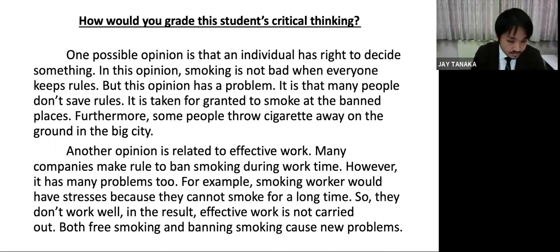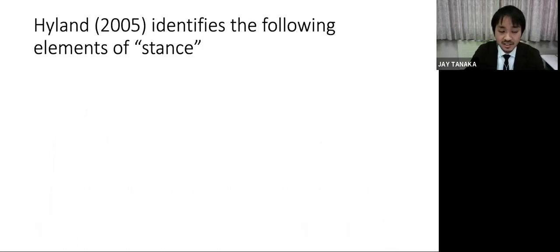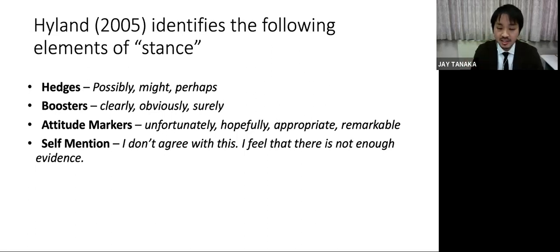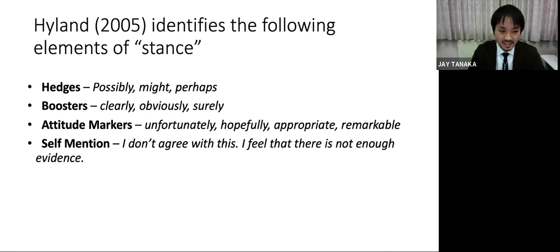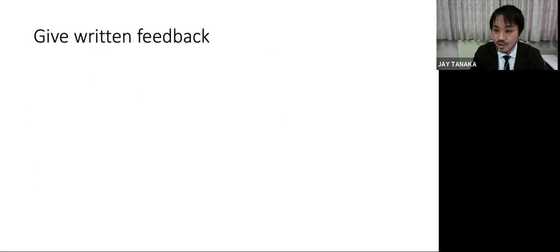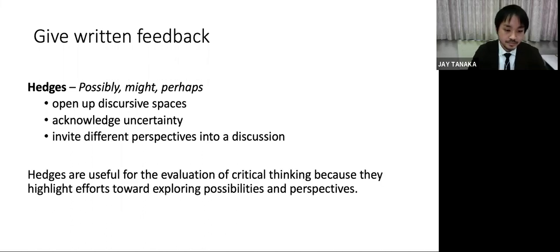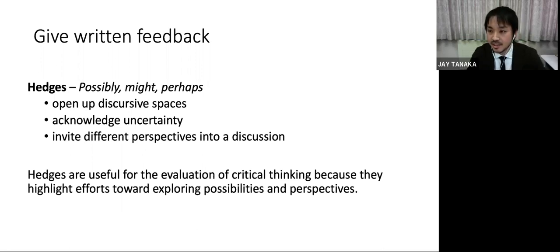A little more detail going into the text: Hyland did some research on the elements of stance — hedges, boosters, attitude markers, and self-mention. This can help people evaluating writing, grading pieces of writing, and helping students with peer feedback. It allows you to find markers in the text and zoom in on those spots, and more often than not they will lead to discoveries of areas of critical thinking or non-critical thinking — maybe reductive thinking as an opposite. Hedges is the clearest one — when you have words like 'possibly,' 'might,' and 'perhaps,' they're generally a clue that you're opening up discursive spaces, acknowledging complications and uncertainties. So it can be a hint at evidence of critical thinking in written work. Within the specific definition I gave, hedges may be useful for evaluating student work.